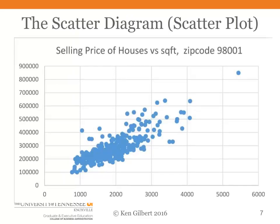What we are going to do is bring in another variable — the square footage of the house. If you were to ask me what I would predict to be the selling price of a house in this community, the first thing I would probably say is, well, tell me how big the house is. What is the square footage? So here we see a scatter plot or scatter diagram. Each point represents a house that has been sold. The horizontal or x-axis is the square feet of the house, and the vertical or y-axis is the price at which it sold.